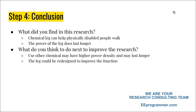The last part is the conclusion. What did you find in this research? The conclusion is a short summary of what you have done, what has been achieved, what is different from previous work, and how successful the experiment was. For example: the chemical leg can help physically disabled people to walk, whereas most scientists focused on electrical legs. Also, the chemical power lasts longer than electrical power and the refill time is much shorter — if that is what you found, write it down.